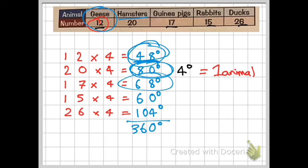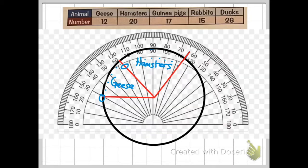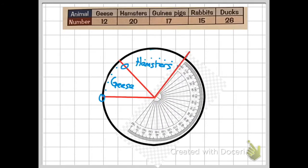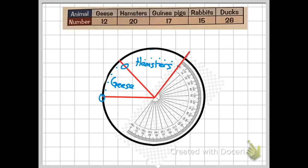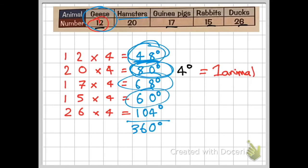I'm going to be going on with the guinea pigs now, 68 degrees. Always just repeating the same thing. Look at my protractor now, it's totally upside down, but this is what a good mathematician does. I'm going to be finding 68 degrees. Get rid of my protractor, get my ruler out and draw a straight line. That's the guinea pigs. Rabbits, 60 degrees.